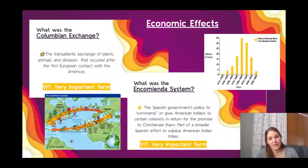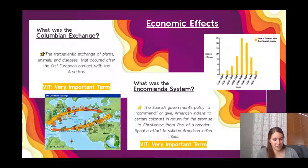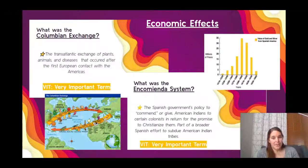Let's start by describing the economic effects. This takes us to two of our VITs — our very important terms. I have a playlist with the most important terms in AP US history that you can check out. The economic effects are really the Columbian Exchange and the Encomienda system. The Columbian Exchange is the exchange of goods, plants, animals, ideas, and diseases — those things that happened once our hemispheres had sustained contact.